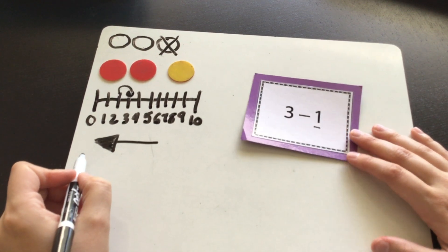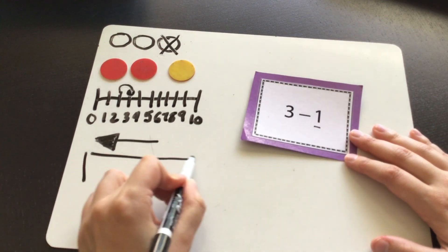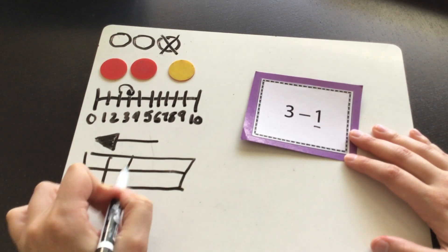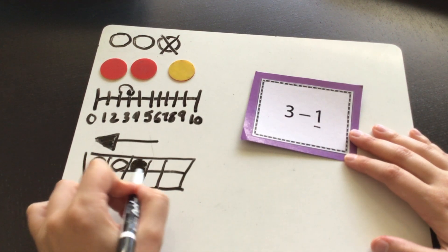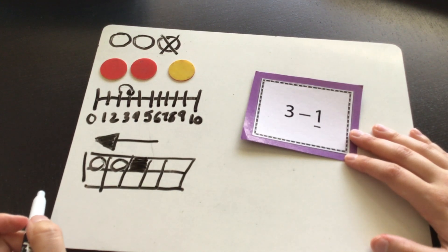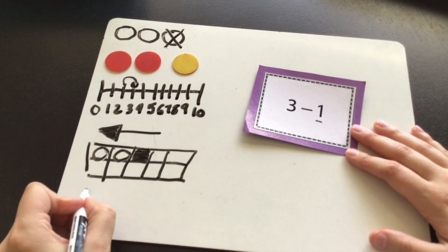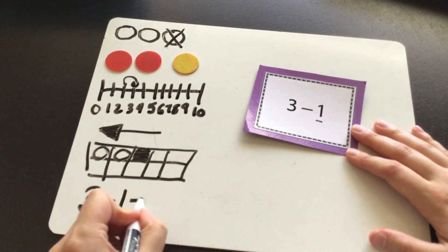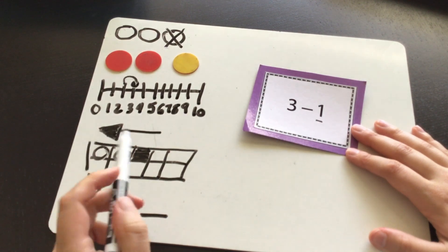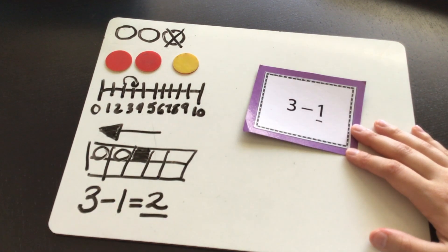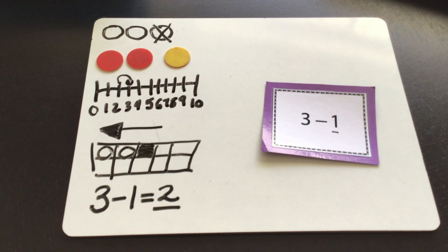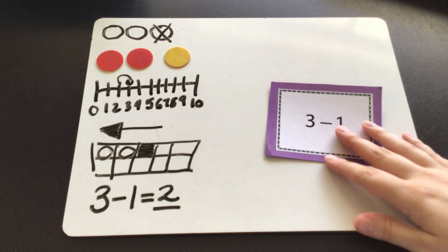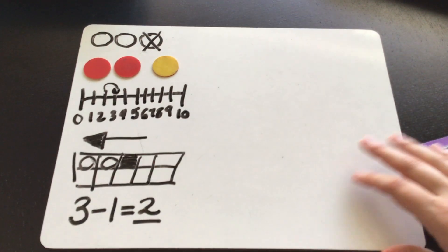If we're doing it on a ten frame, if I have three and then I take one away — so now we can answer our subtraction sentence. Three take away one equals how many? Two. Three take away one equals two. When we're subtracting, we're taking away or we're getting rid of. It's a little bit different than adding, but once you know what to do, it's just as simple.